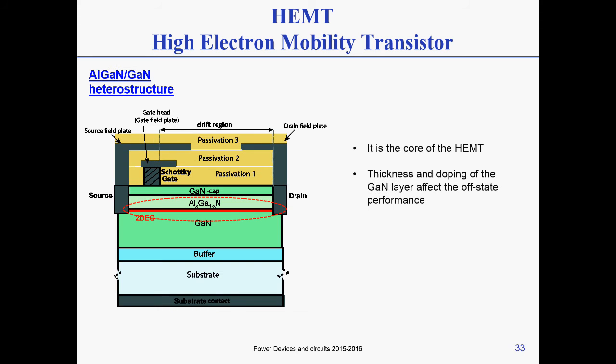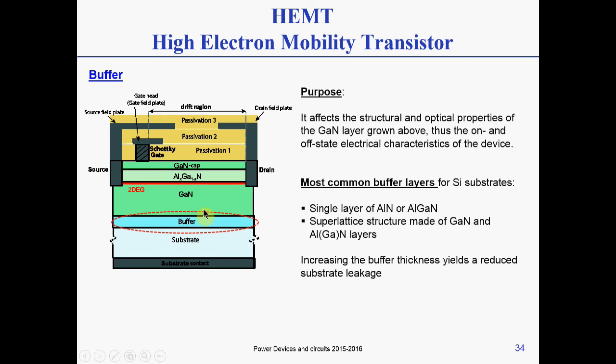The AlGaN heterostructure — we know why we have it. It's because we want a high electron density in the channel, given the piezo-polarization of the material. The thickness of the AlGaN, as we have seen before, will define the value of the 2D electron concentration you have.